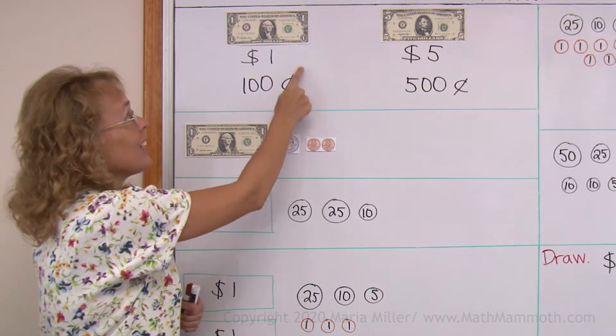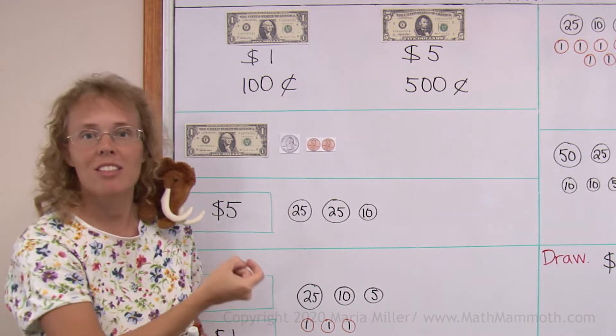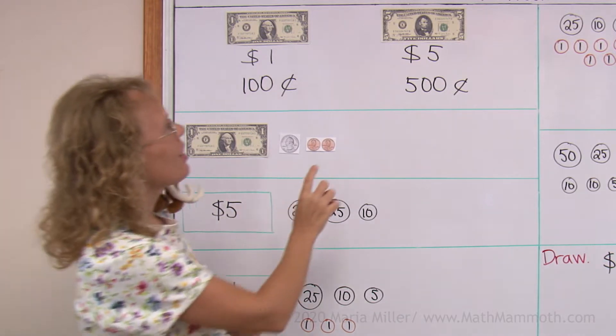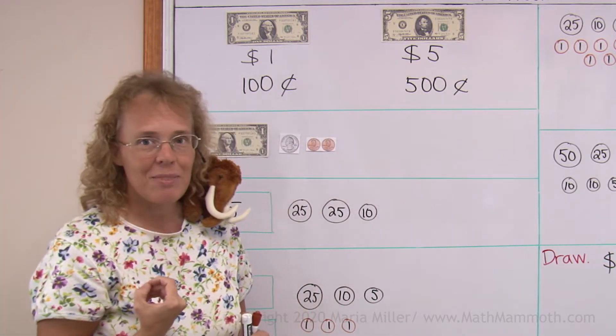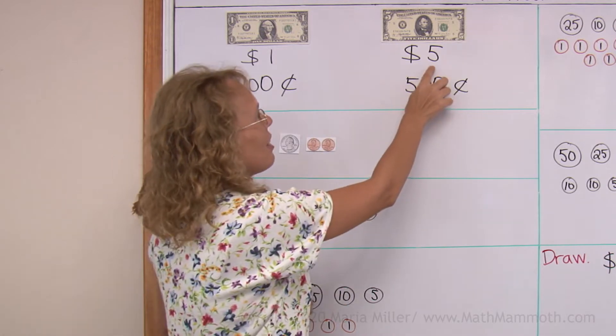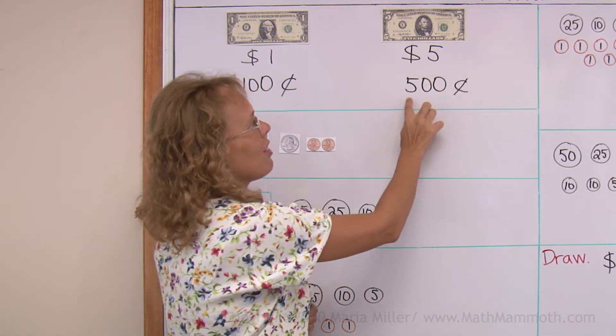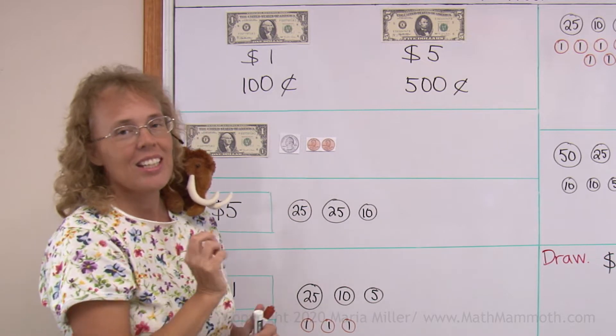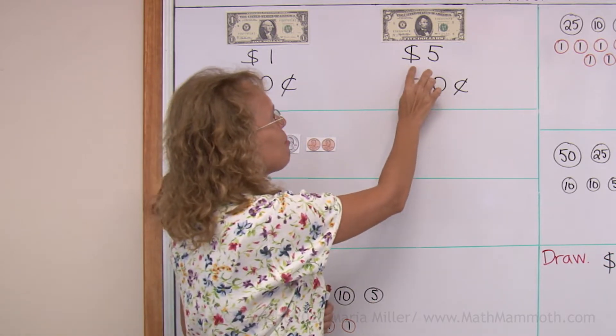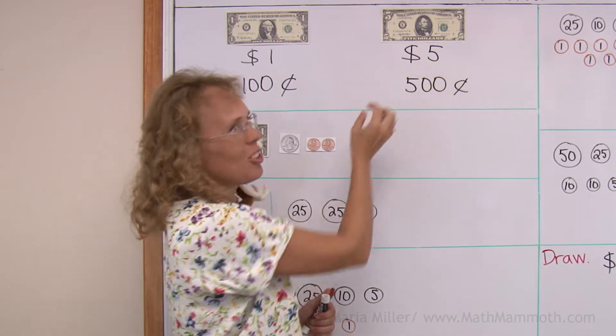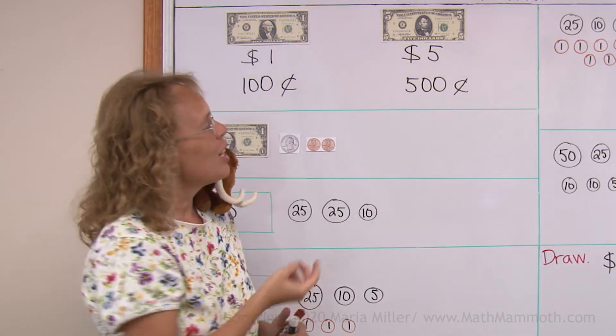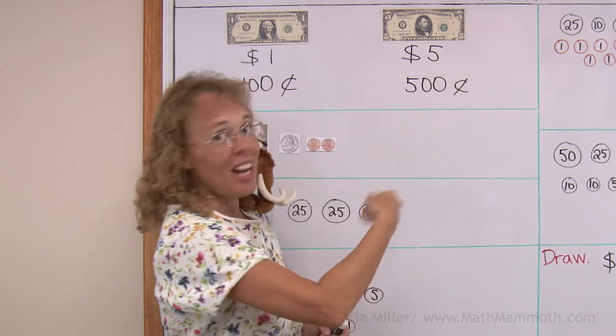Whereas hundred cents, the symbol for cents comes after the number. Look over here, I have a five dollar bill. So we write five dollars or it is worth five hundred cents. Notice carefully how this symbol for the dollar comes in front of the number, whereas the symbol for cents comes after the number.